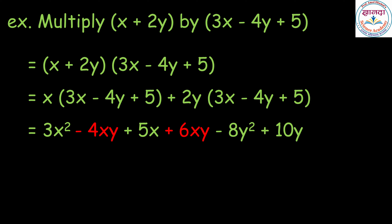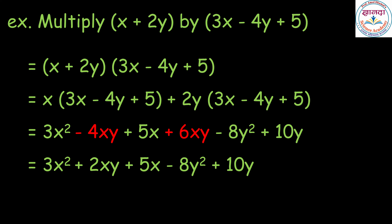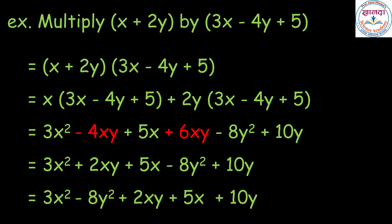Adding like terms minus 4xy and 6xy, we get 3x square plus 2xy plus 5x minus 8y square plus 10y. Rearranging the terms, the answer is 3x square minus 8y square plus 2xy plus 5x plus 10y.